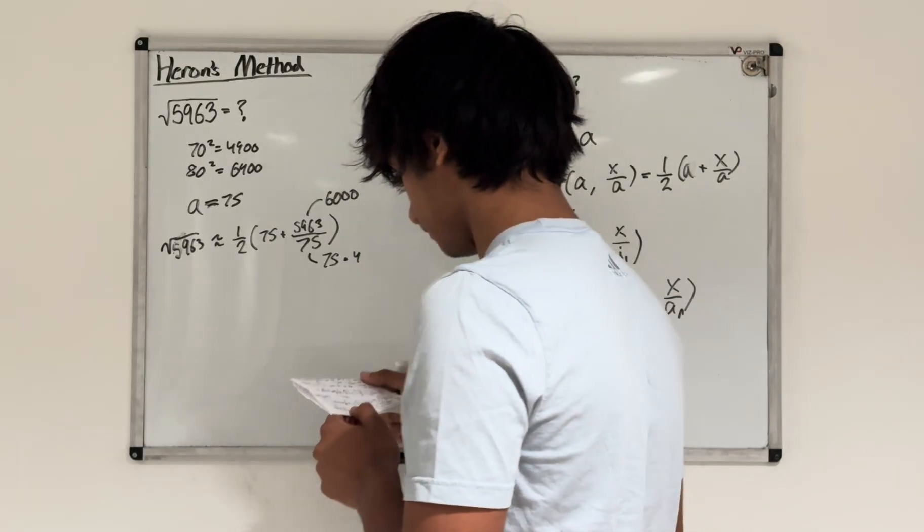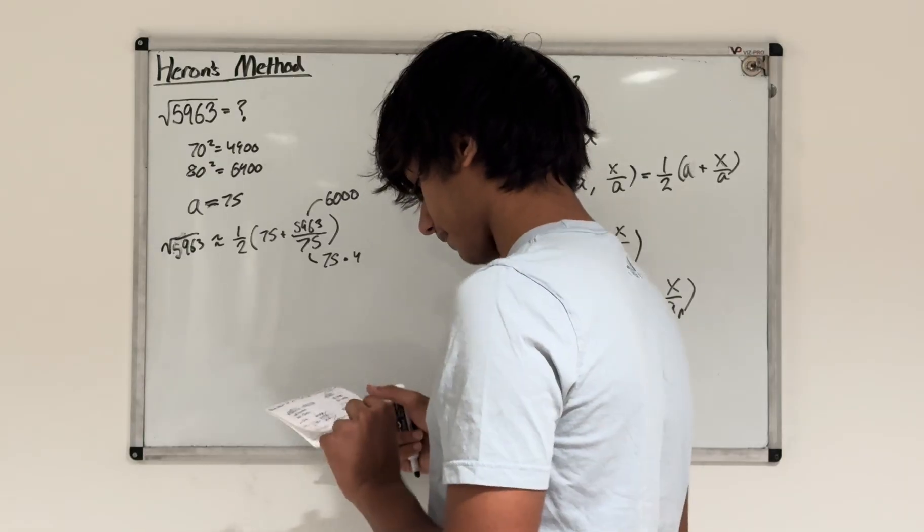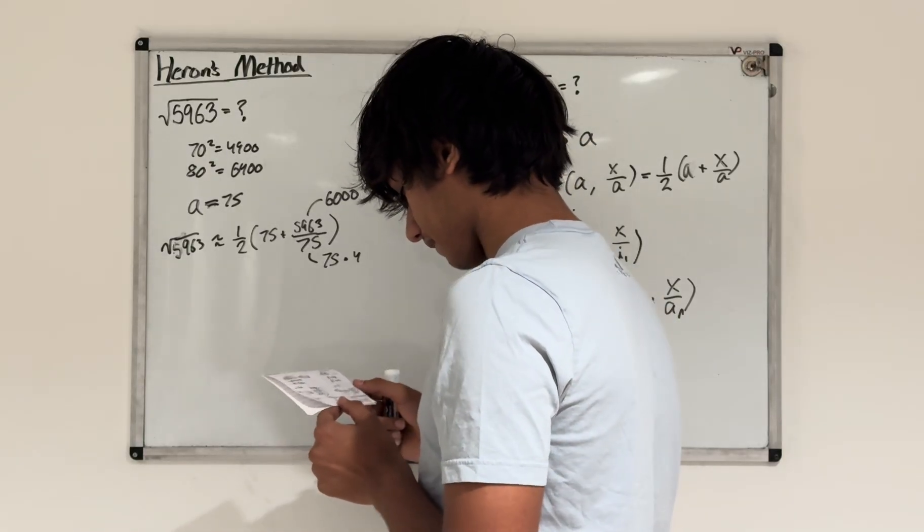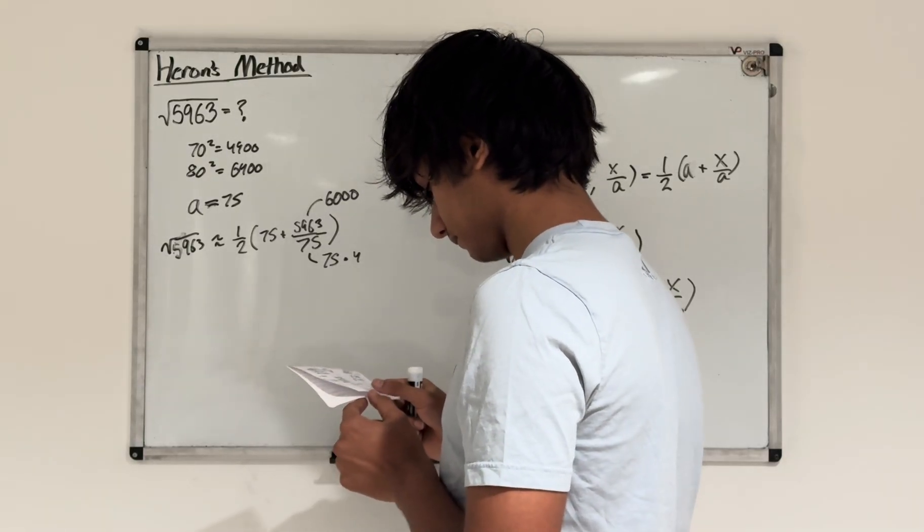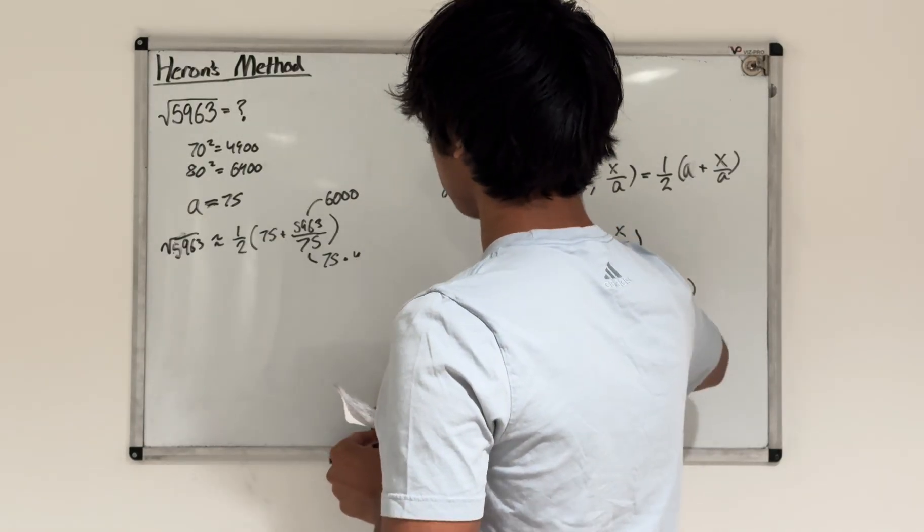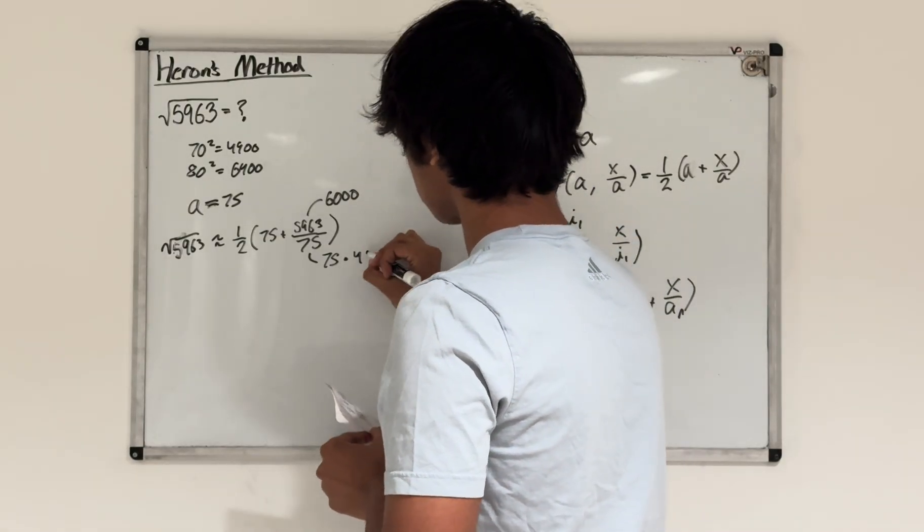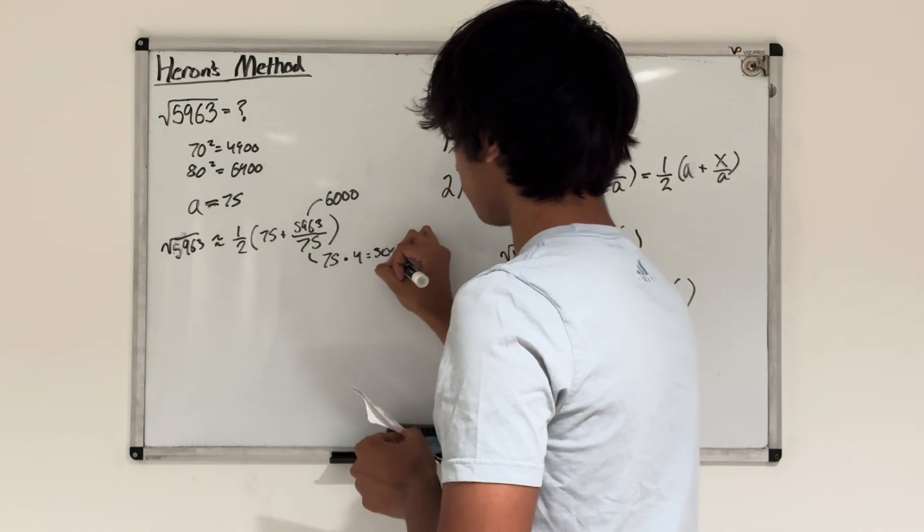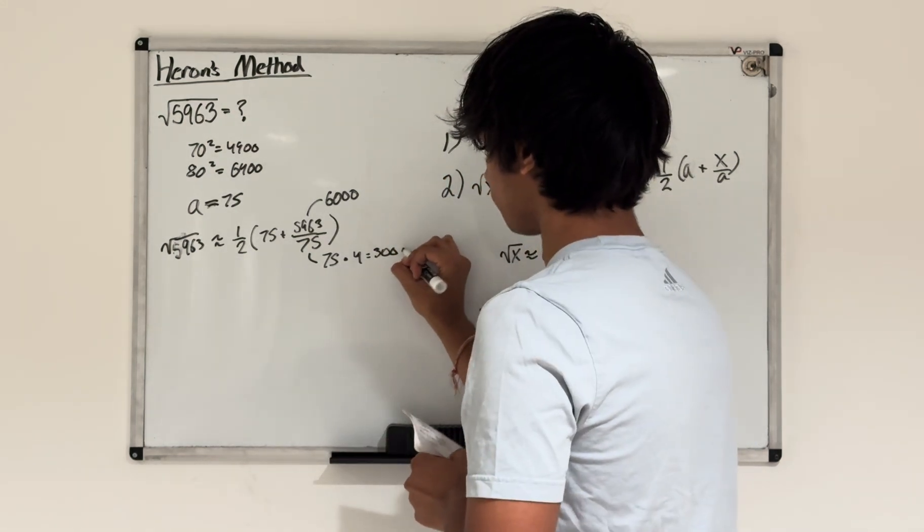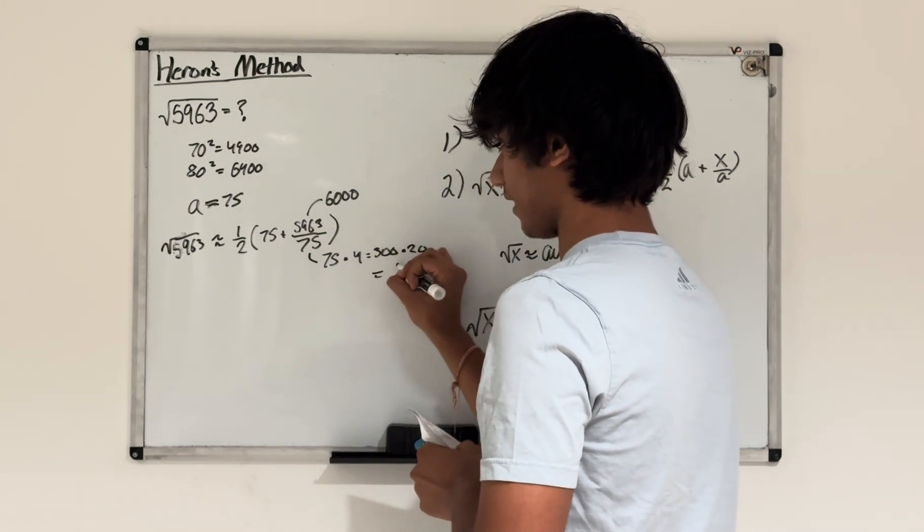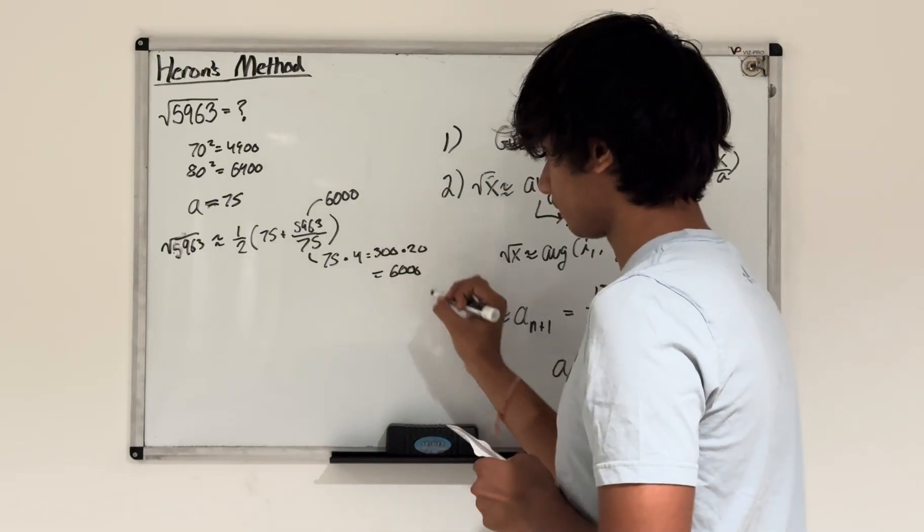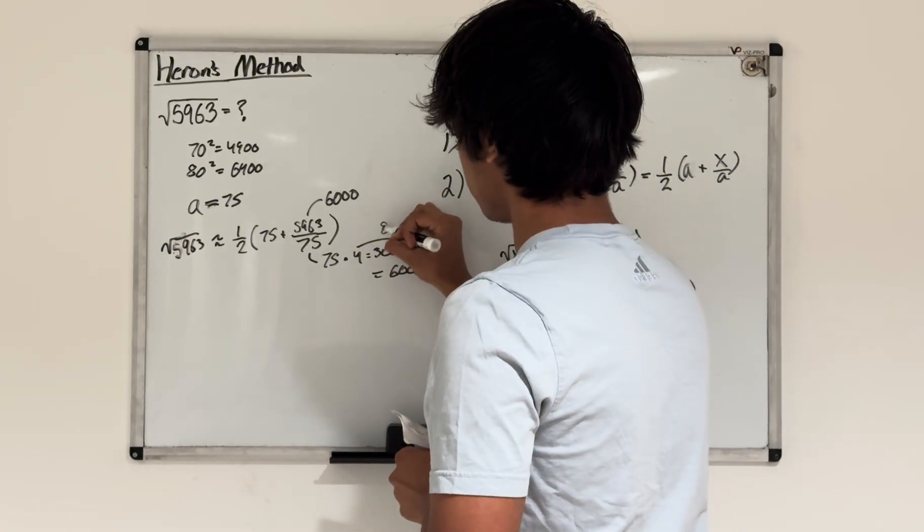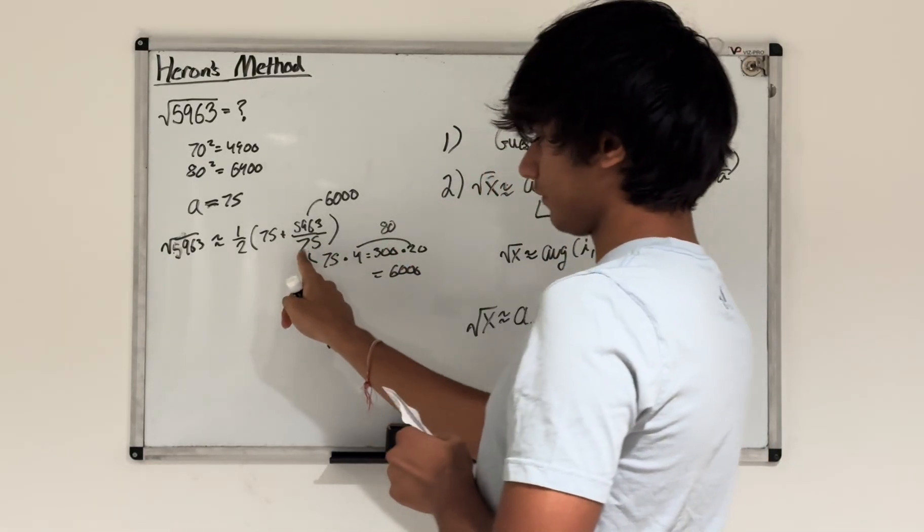From here, you can say that 75 times 4 is 300, and if I multiply that by 20, that's 6,000. So 4 times 20 is 80, and therefore this value should be 80, or is approximately 80.